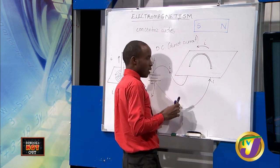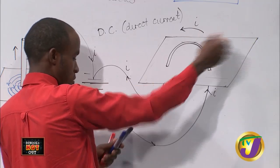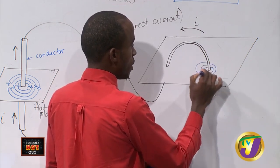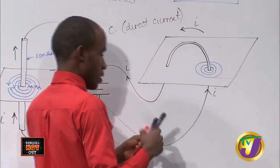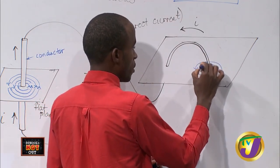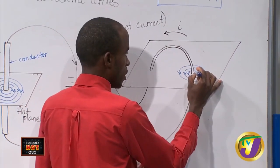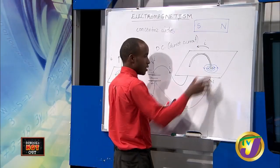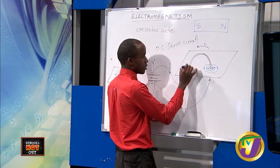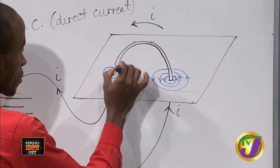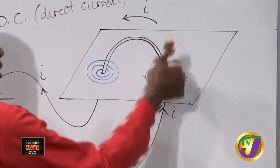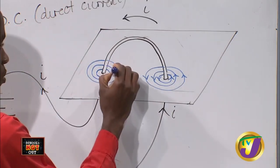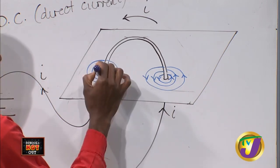The same application taken for the straight conductor we extend here for the loop. When the current goes up, it curls around, and we have concentric circles setting up. The right-hand grip rule tells us what is happening. On this section it curls in and goes out that way, and on the other side it goes the other way — pointing this way and that way.